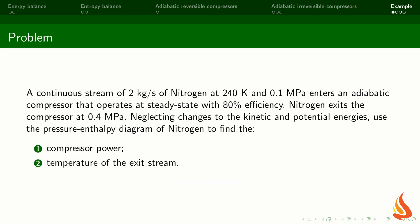Let's apply this procedure to a specific example. The problem is about a continuous stream of 2 kilograms per second of nitrogen at 240 kelvin and 0.1 MPa that enters an adiabatic compressor operating at steady state with 80 percent efficiency. Nitrogen exits the compressor at 0.4 MPa. Neglecting changes to the kinetic and potential energies, use the pressure-entropy diagram of nitrogen to find the compressor power and the temperature of the exit stream.